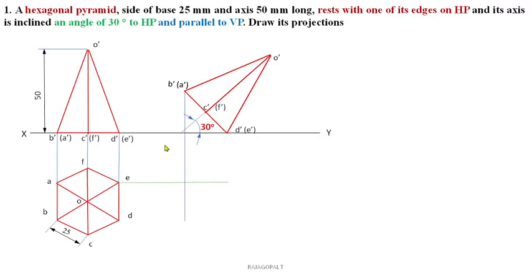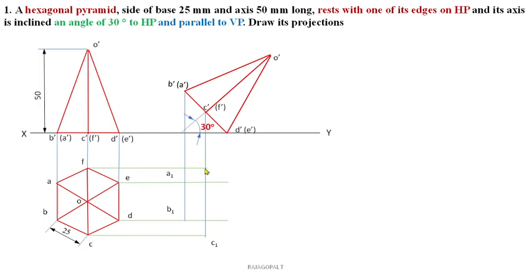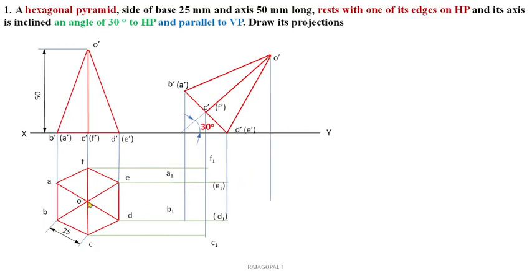Here it is A'. You can extend the projectors; both will meet at this point — mark it as A1. Then B' also lies on the same projector. Here this is corner B, so you can extend the projectors from corner B and mark the meeting point as B1. Next is C' — here it is corner C; extend the projector from C and mark as C1. Then F' — extend the projectors from F and mark as F1. The remaining are D and E — extend the projectors from D' and E', here it is E and D, and mark as D1 and E1. Finally O' — extend the projector from top view O; both meet at this point, mark as O1.